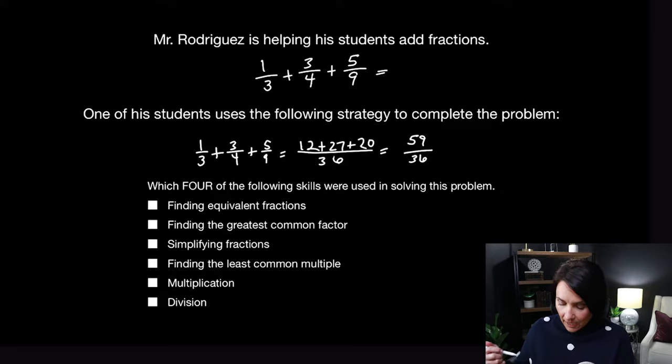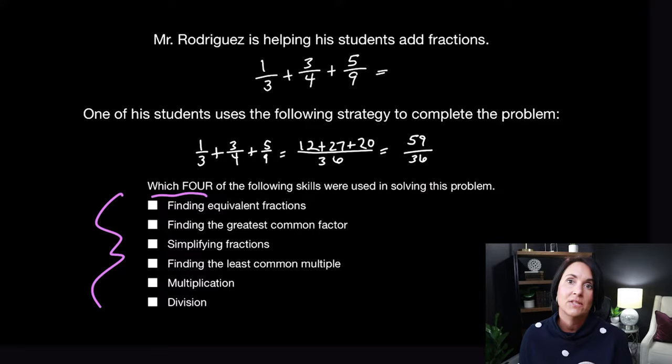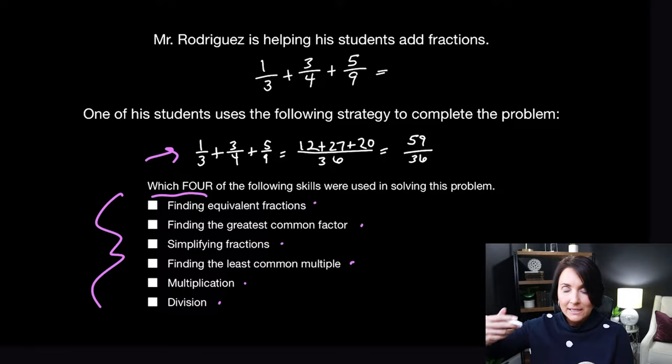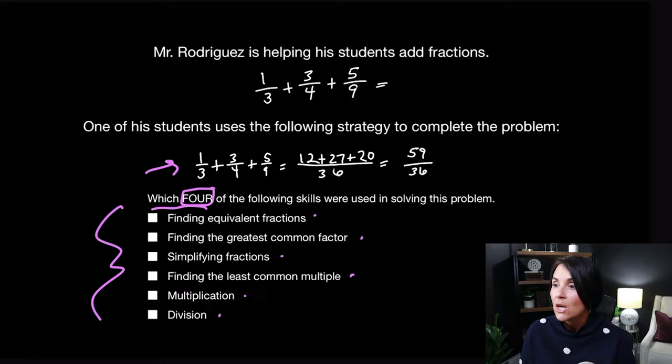Let's take a look at the second question, which is a little bit more difficult. It asks: which four of the following skills were used in solving this problem? The answer choices are: finding equivalent fractions, finding the greatest common factor, simplifying fractions, finding the least common multiple, multiplication, and division. I have to choose four, which is a little bit harder than normal. Mr. Rodriguez is helping students add fractions.